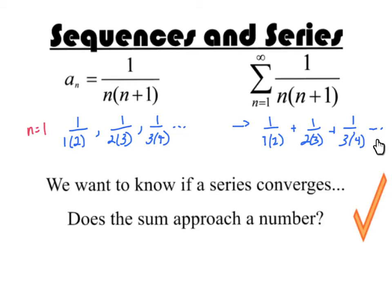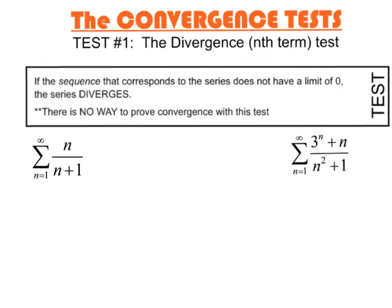Which brings us to our first convergence test. Now, we are going to look at quite a few different tests here for convergence and deciding if a series converges. I think this one is maybe the most obvious and easiest. The idea here is that if a sequence that corresponds to the series doesn't have a limit of 0, then the series diverges.